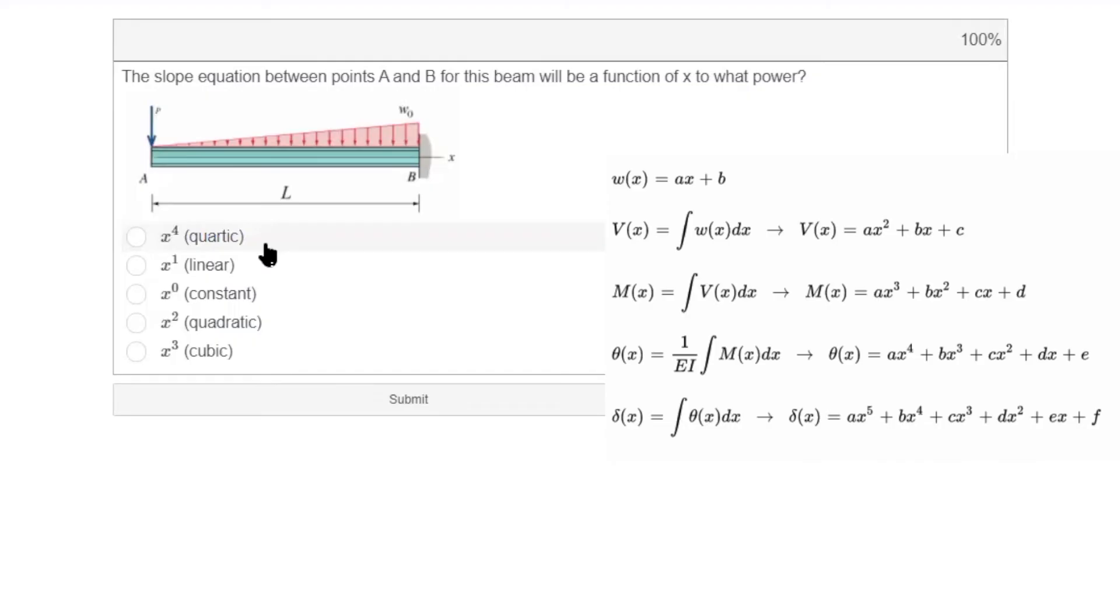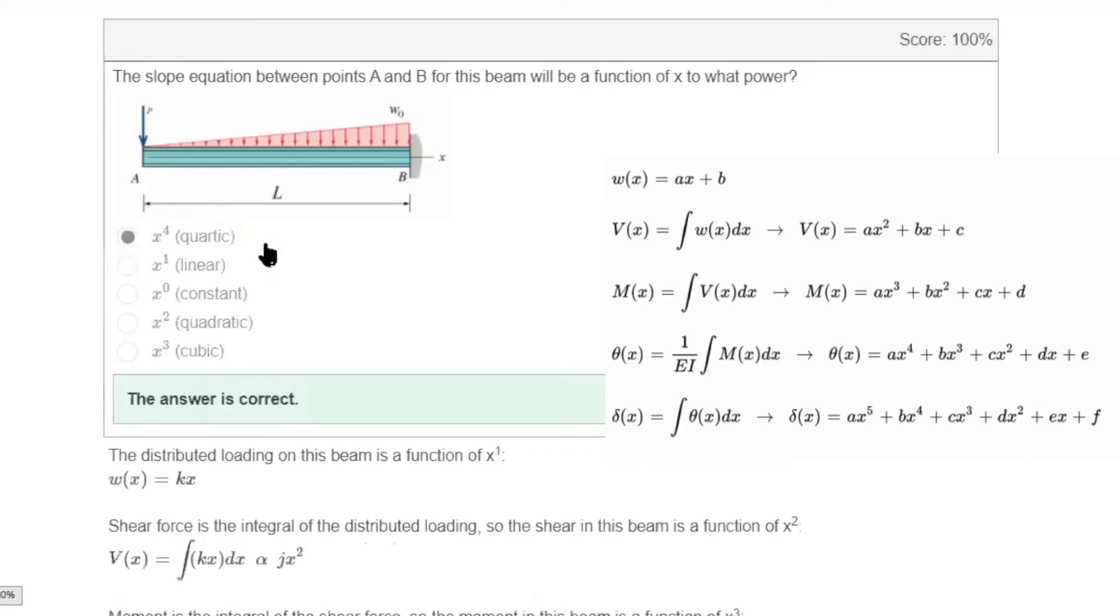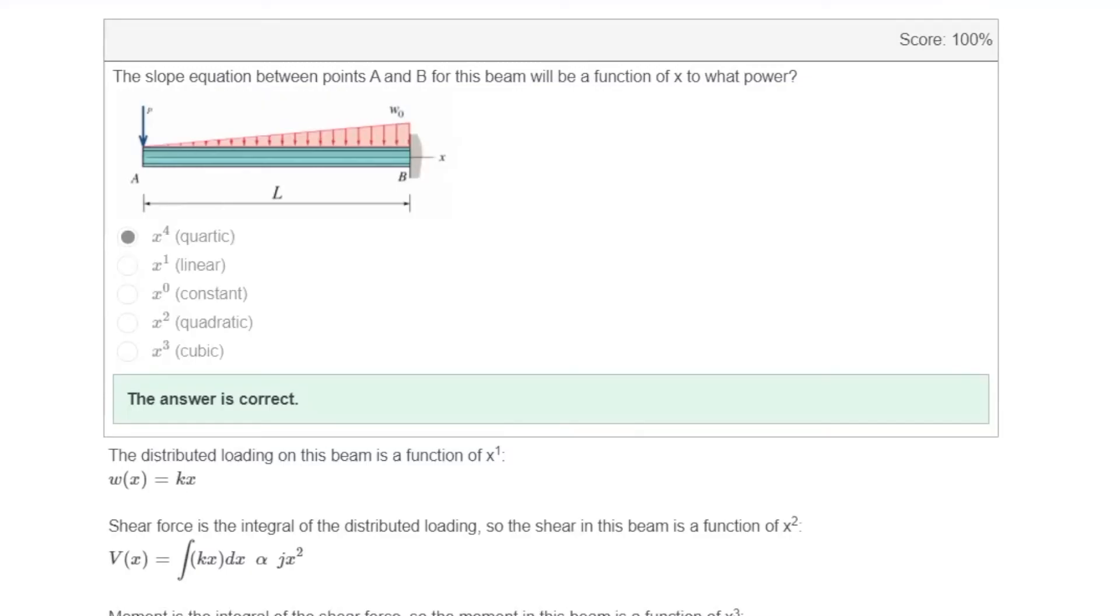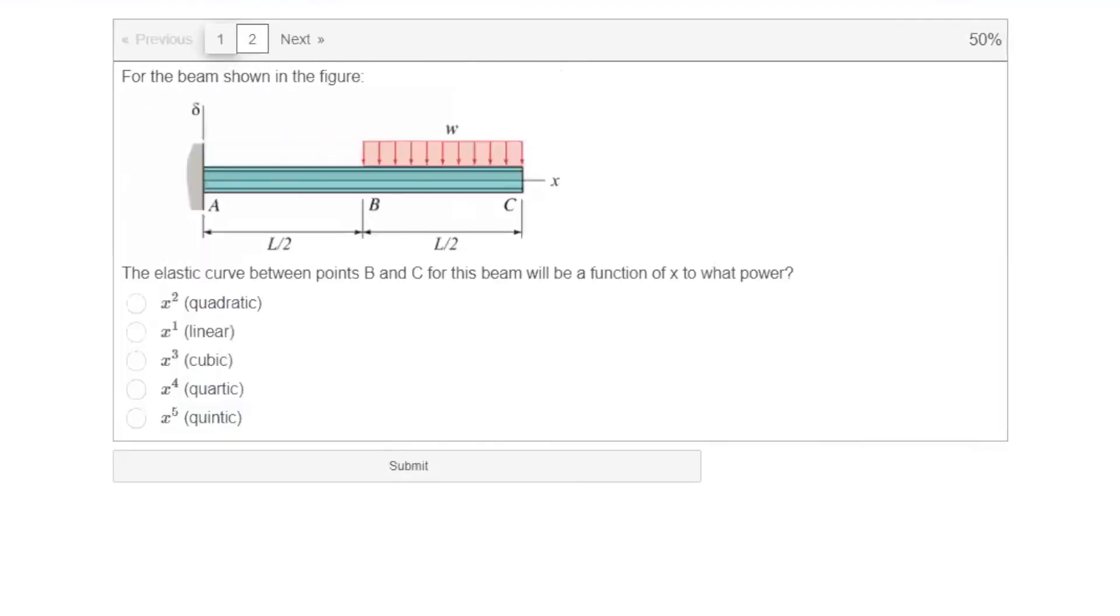Loading is one. Shear would be two. Moment is three. Slope is four. So that is going to be the answer for this part. All right. And this could be repeated for many other cases. Let me show you another one, for instance.